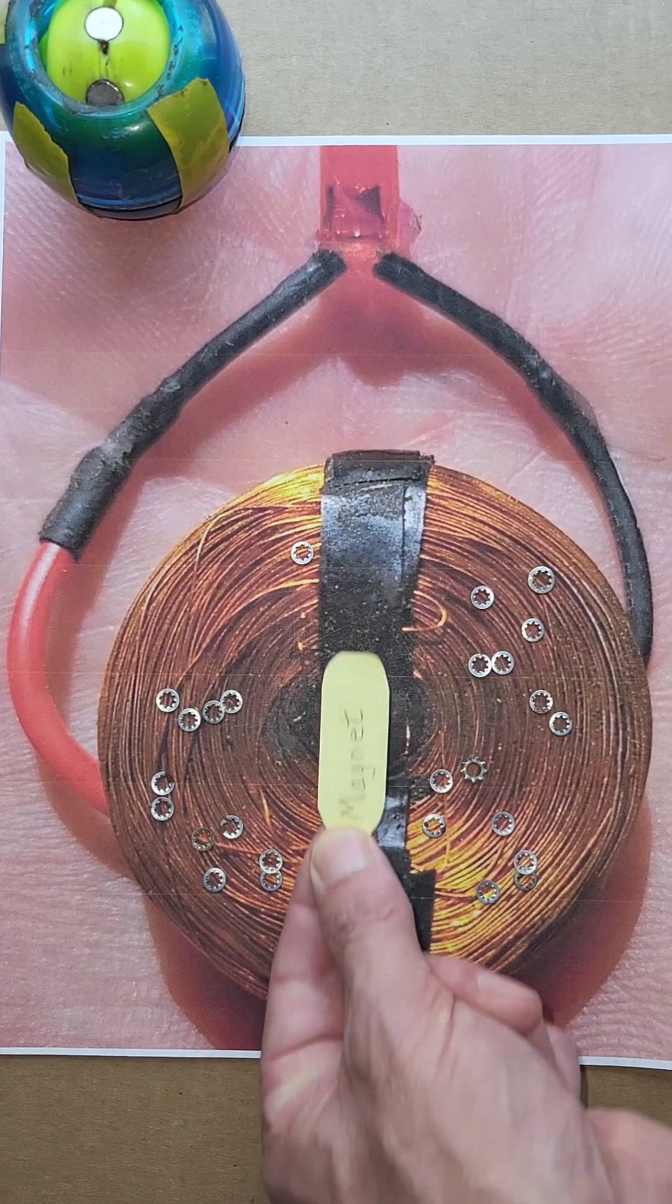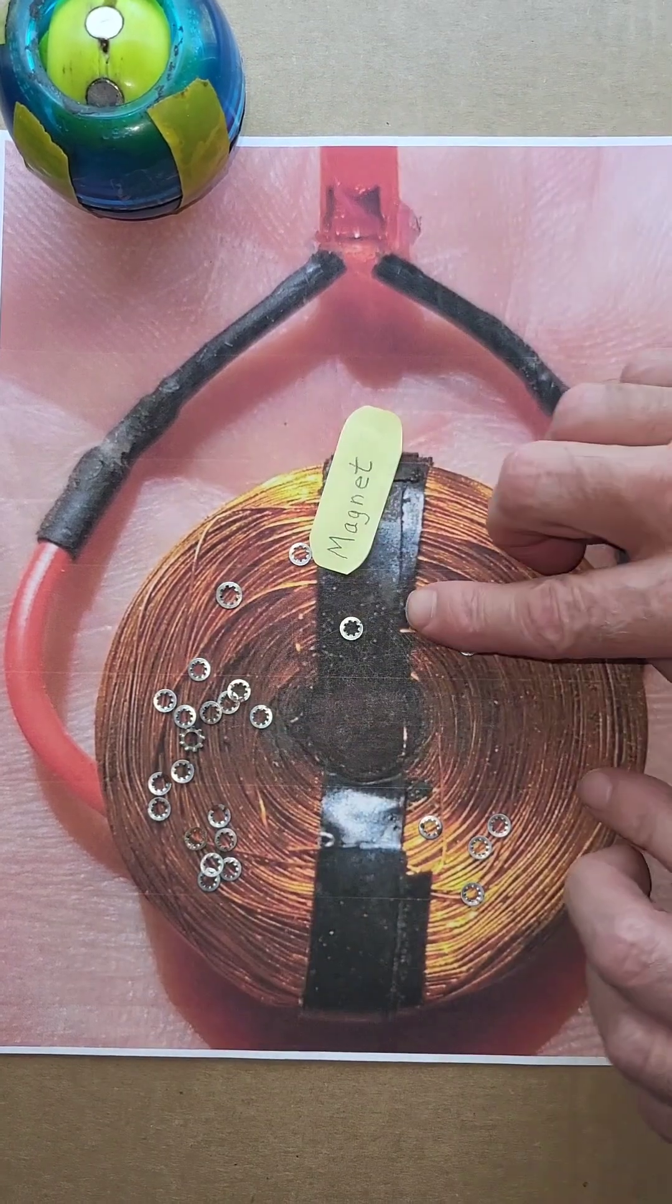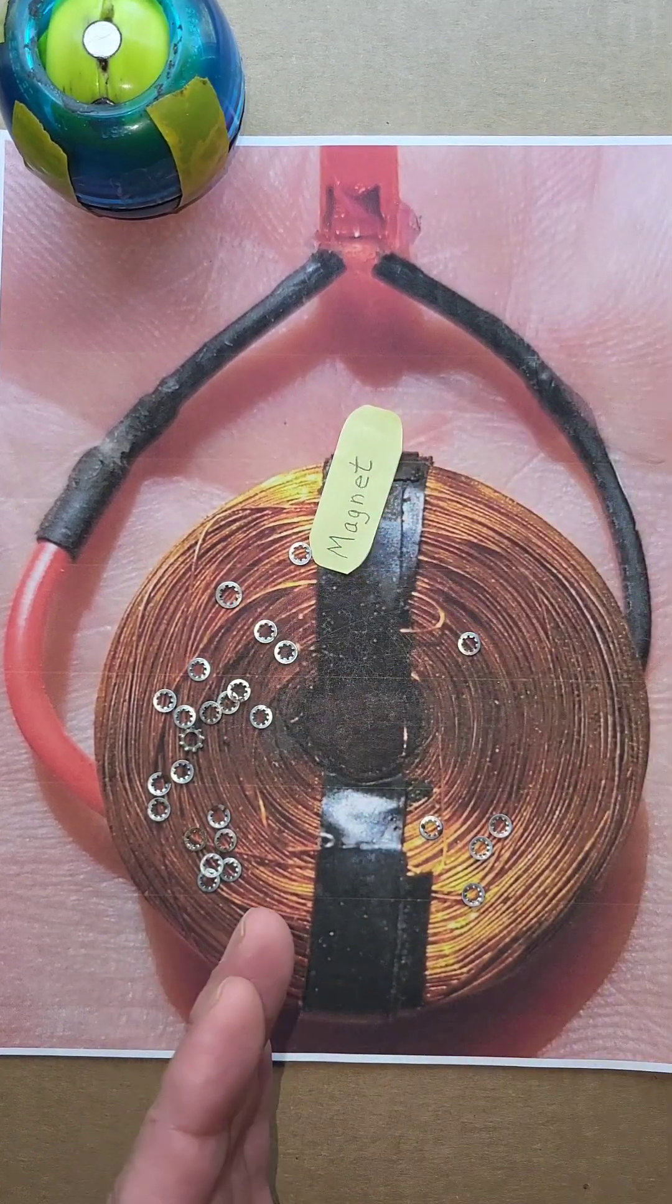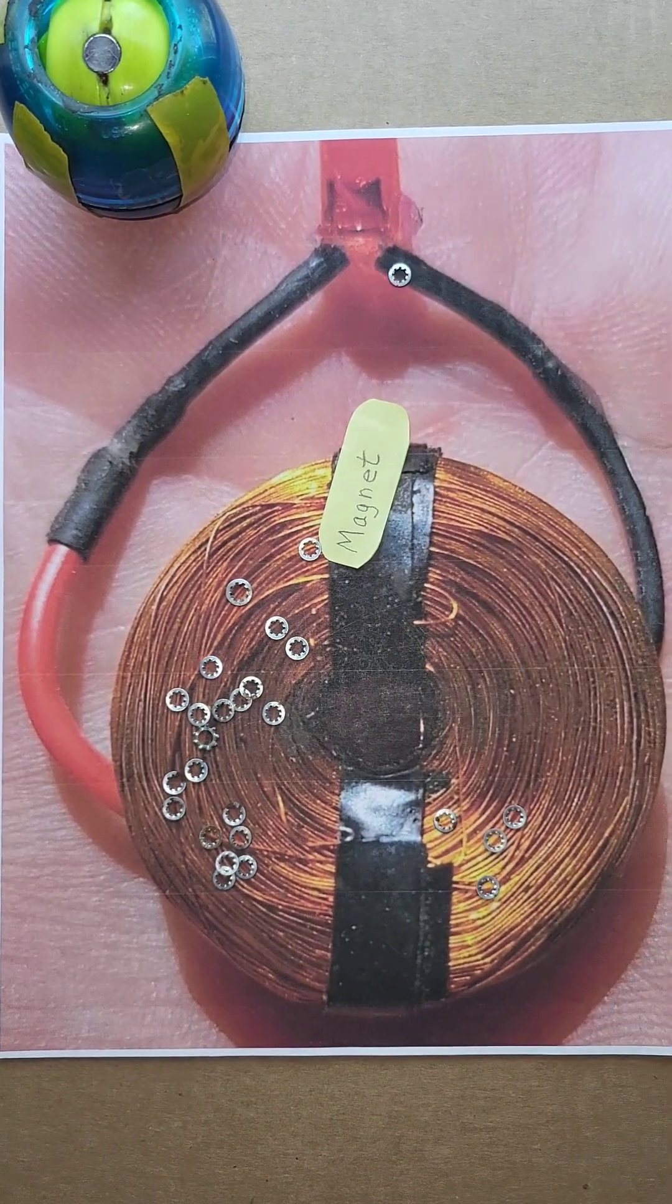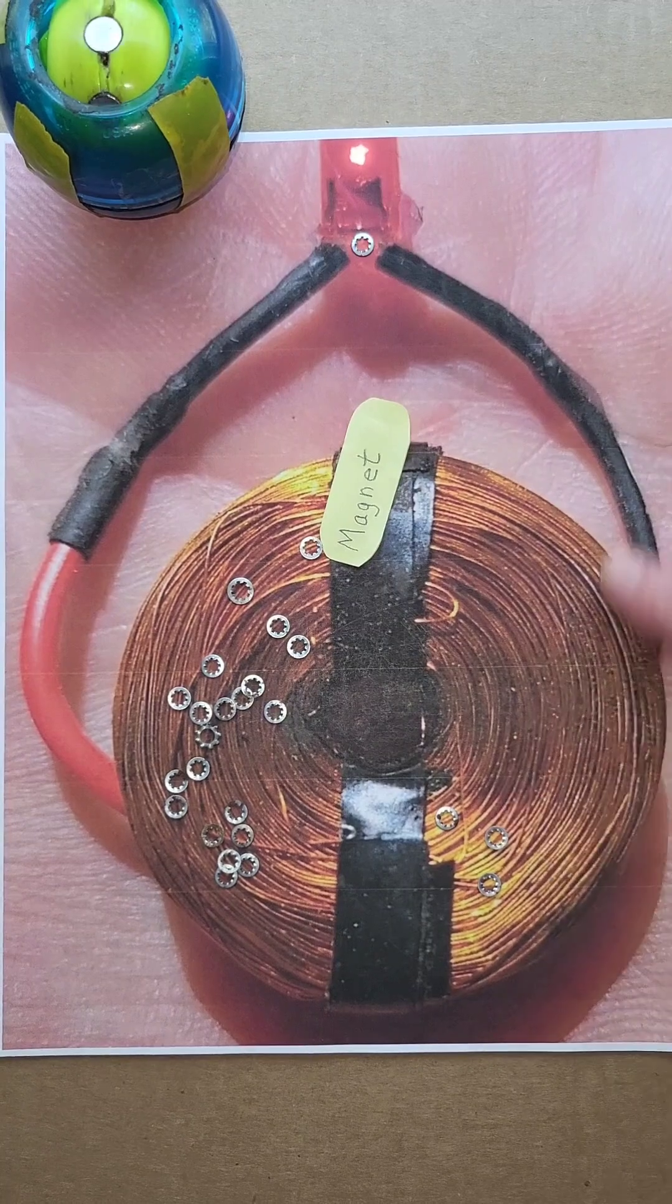When a magnet passes by a coil wire, it sweeps all the electrons to one side of the coil, creating an imbalance of electrons. Some of those electrons go through the wire and power the light.